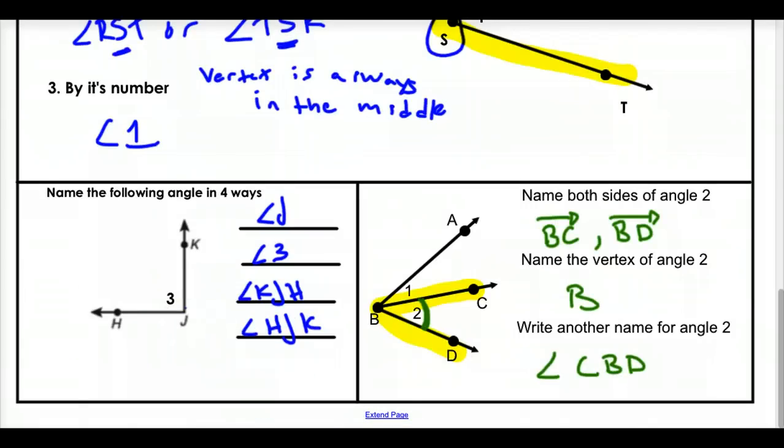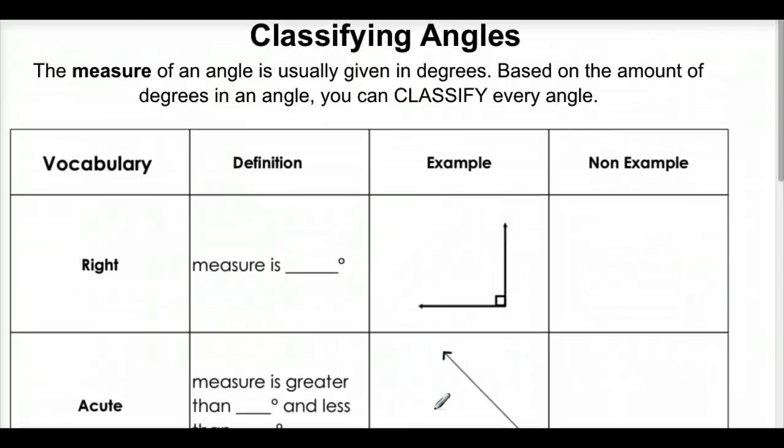So we know how to name our angles now. Now there's some ways to classify them. The measure in angle is usually given in degrees. This year we're going to use in degrees. There's other ways to measure an angle, but we're used in degrees. Based on the amount of degrees in angle, we can classify them. Now a right angle, you might remember this, has a measure of 90 degrees.